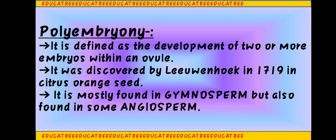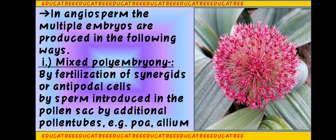Polyembryony is mostly found in Gymnosperms. But there are some Angiosperms that also show Polyembryony, and we will discuss those in today's class. In case of Angiosperms, four different types of Polyembryony have been observed. The first type is Mixed Polyembryony.